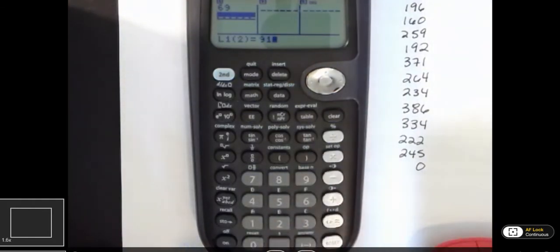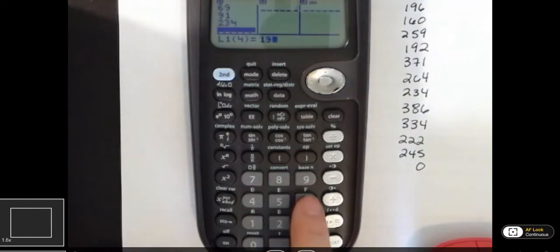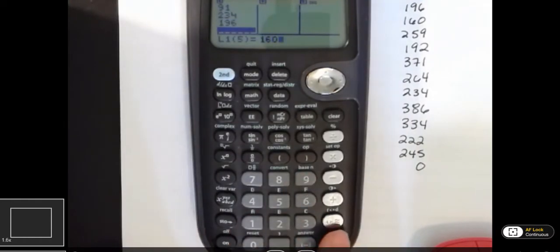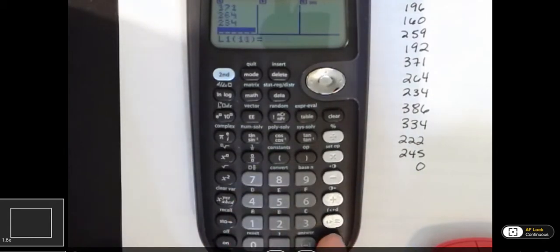The next value is 91. And I'm going to use the enter key. And I'm going to go ahead and use the enter key for the rest of these because it keeps my hand out of the video. So I just start to enter all my data. Each time I enter a data value, I hit enter or down arrow to get that in. After 160, I have 259, 192, 371, 264, 234, 386, 334, 222, 245, and 0.